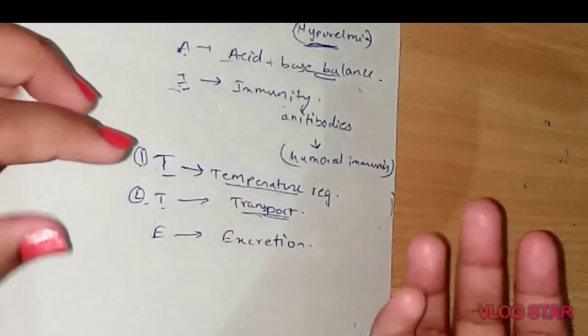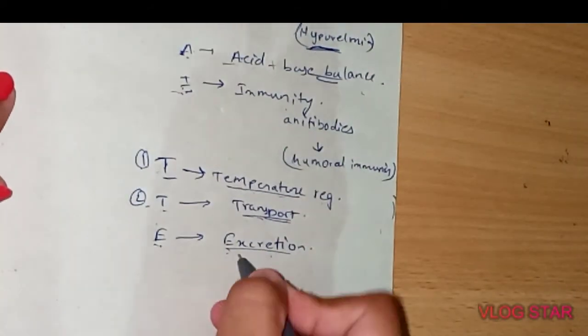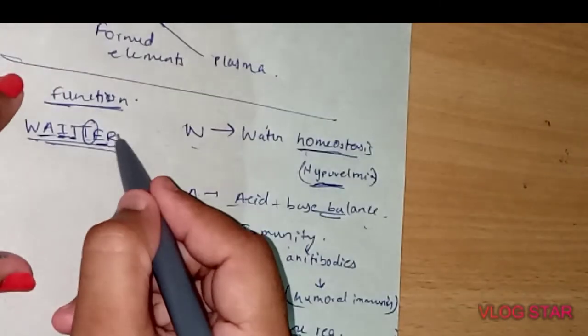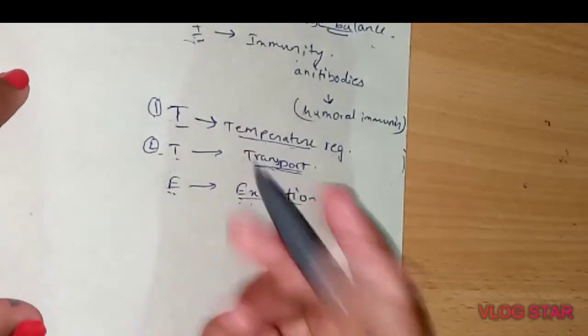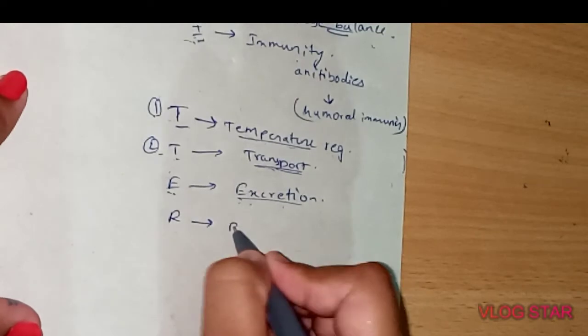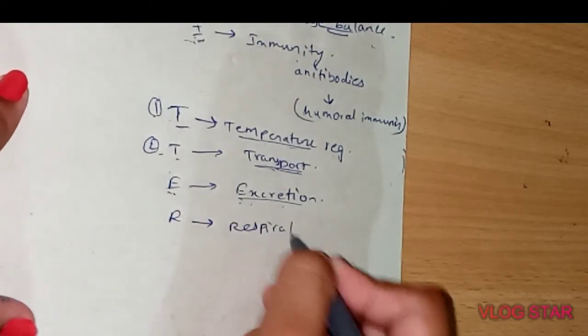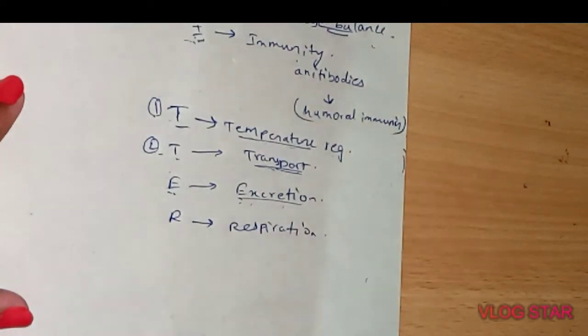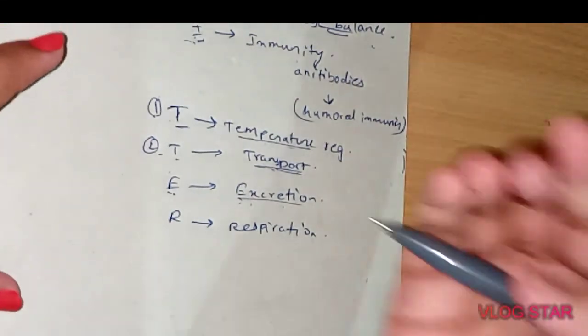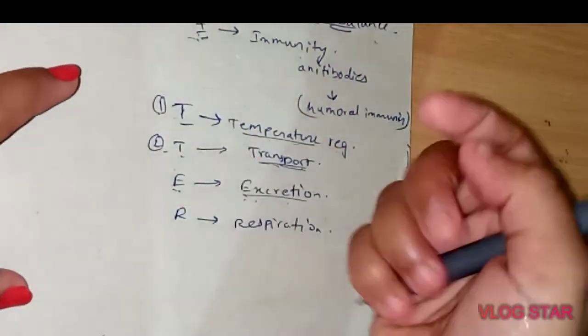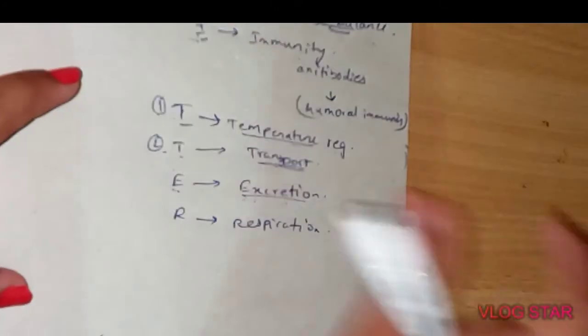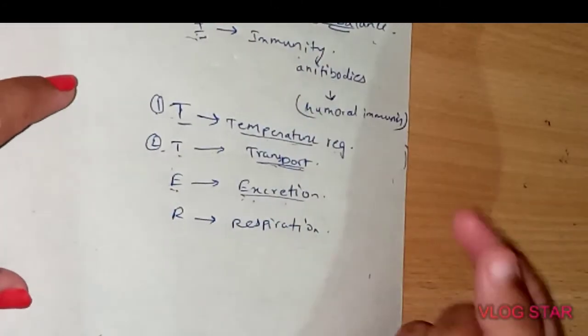And R is for respiration. Blood transports oxygen from lungs to tissues and carbon dioxide from tissues to lungs. This process of transportation happens with the help of blood.